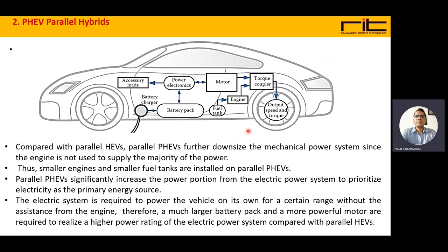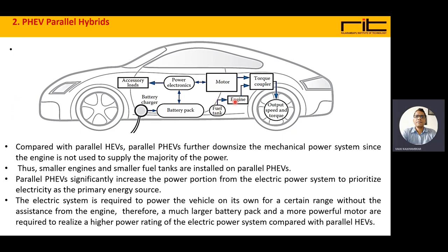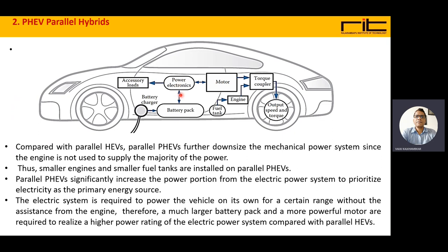The second architecture is the plug-in hybrid electric vehicle parallel hybrid mode. Here, the torque is provided by the engine directly via the torque coupler to the wheels, and also via the battery input through the motor to the wheels via the torque coupler — so both can supply and they operate in parallel. Additionally, there is charging from the external source to the battery pack, which is not available in conventional hybrid mode but in plug-in hybrid electric mode, the battery can be charged from the external source — the grid or power supply.